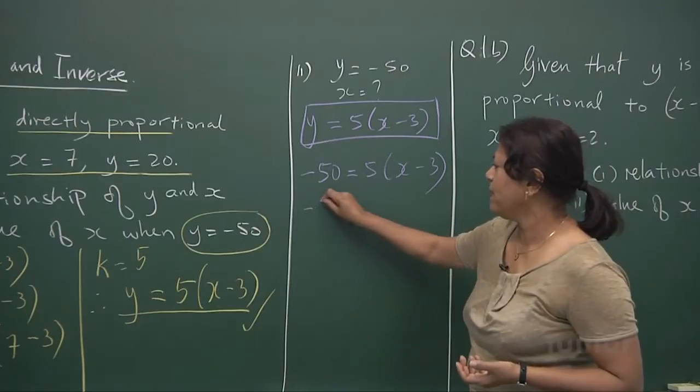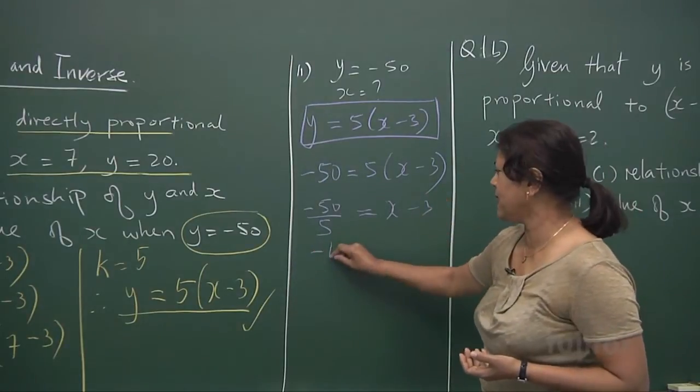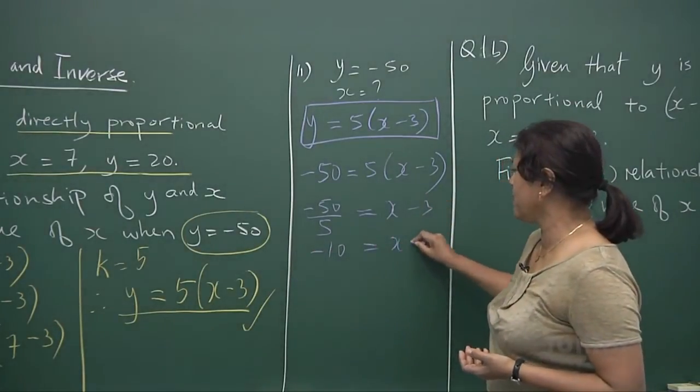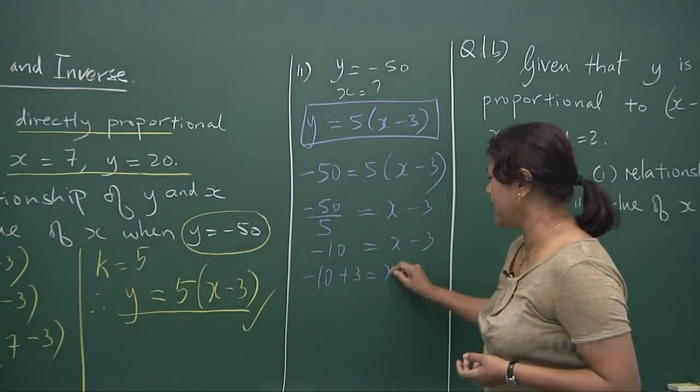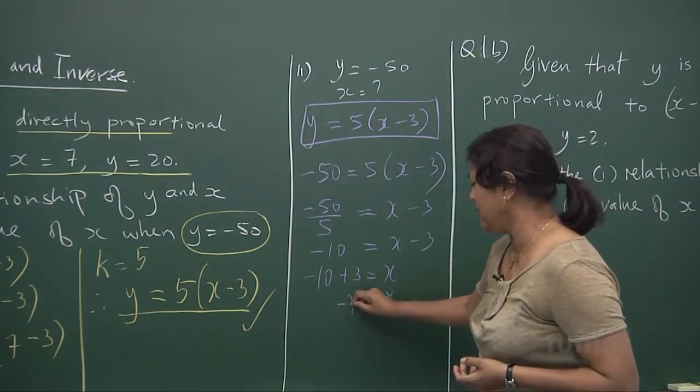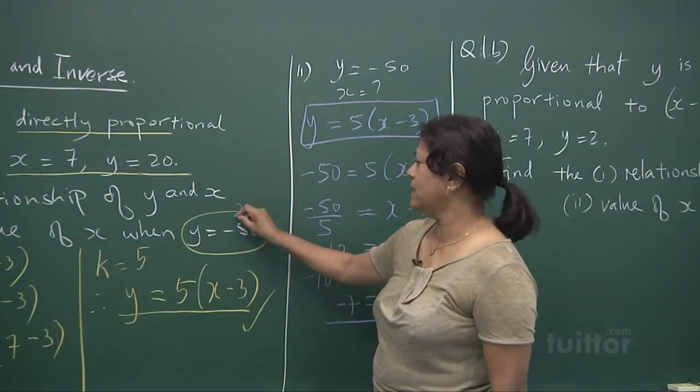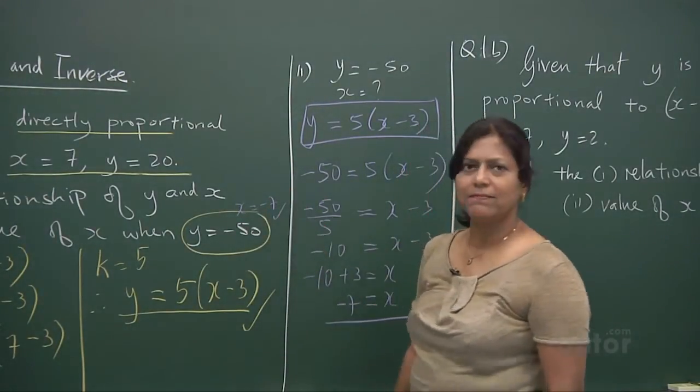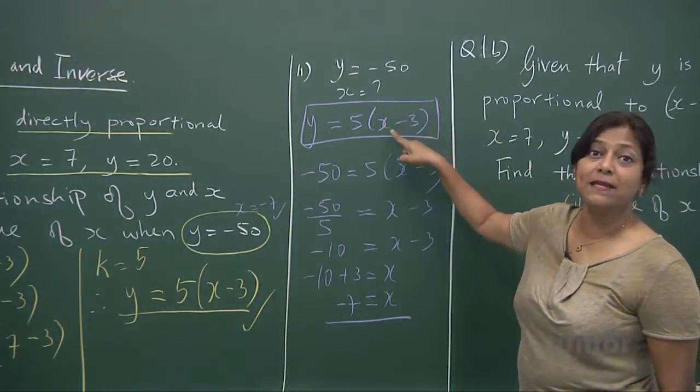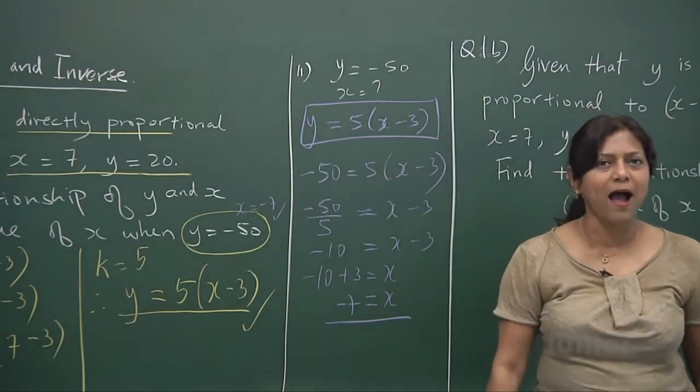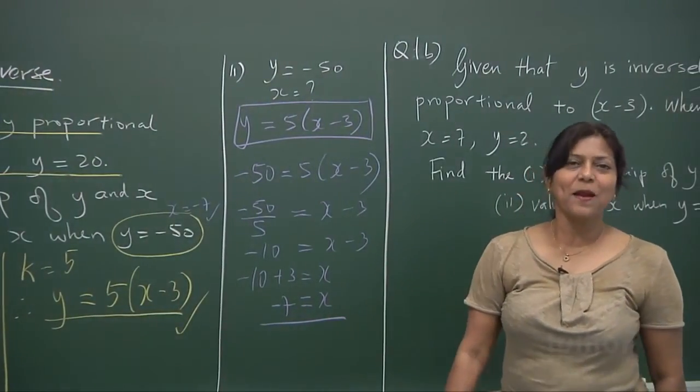Bring the 5 over. Minus 50 times become divide. And then, what do you get? Minus 10. So your x is going to be, bring your minus 3 here. Minus 10 plus 3. Your x is a minus 7. Oh la la. Right? So when y is minus 50, your x is a minus 7. Look at it. When you have minus 7, minus 3 is a minus 10. Minus 10 times 5, you get a minus 50. So that's how you counter check.